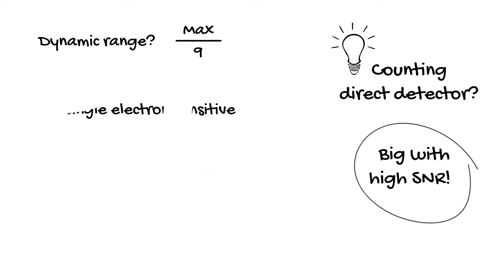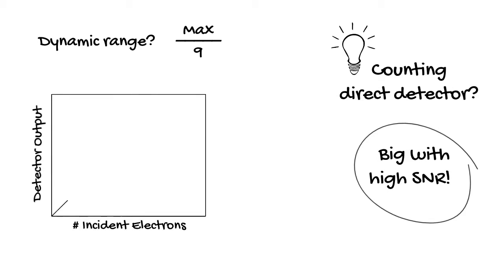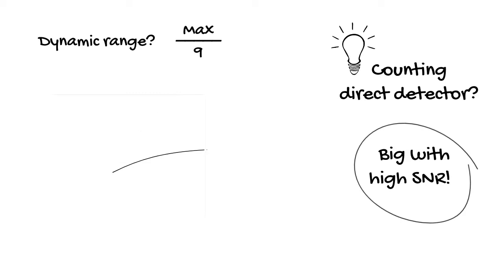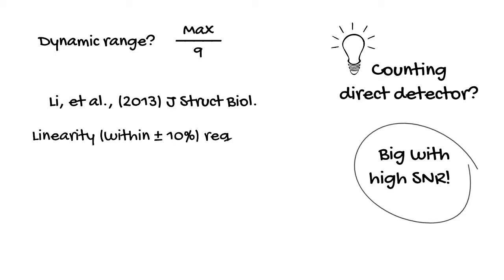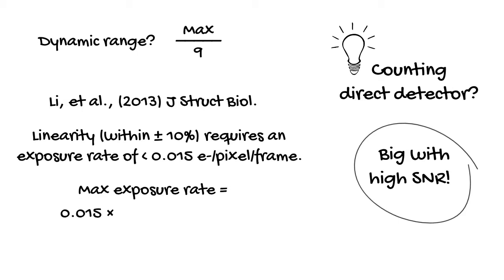Now, how about the maximum? For the EEL spectrum to be interpretable, the detector must be linear. In other words, the signal detected in each channel must be proportional to the number of electrons with the energy of that channel. It's known that electron-counting direct detectors lose linearity as the exposure rate increases. Some manufacturers actually give this away by calling their integrating mode linear mode, in contrast to counting mode. Figures from Lee et al. in a 2013 JSB paper showed that linearity within plus or minus 10% requires an exposure rate of no more than 0.015 electrons per pixel per frame. So let's use that as our maximum for counting. Remember, it's certainly possible to acquire images with a brighter beam than that. But the data will quickly lose its utility as linearity is lost.